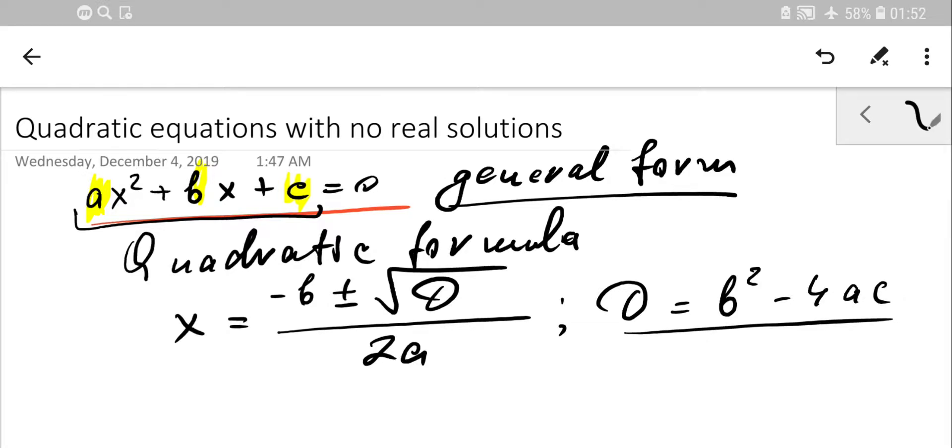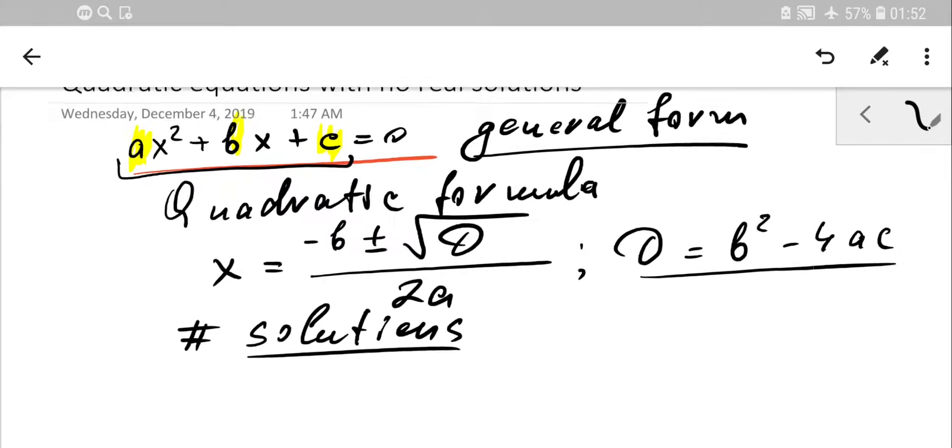Okay, so how to estimate the possible number of solutions. We are talking about how many solutions this equation might have. We consider number of solutions, we just consider discriminant. Exactly this expression what's reading here.